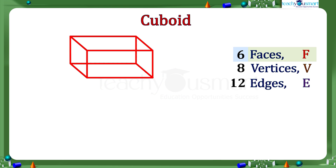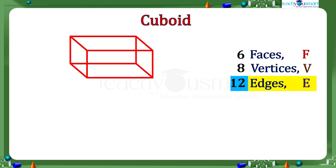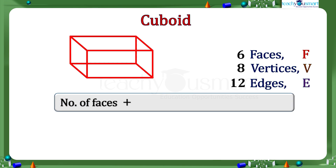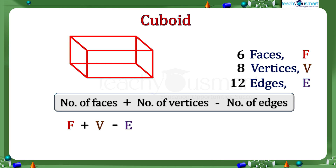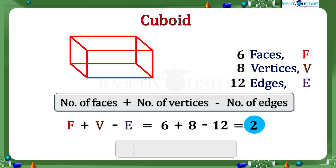Let's see how we can relate the number of faces, vertices, and edges. For that, add the number of faces to its number of vertices and then subtract the number of edges. That is F plus V minus E equals 6 plus 8 minus 12, which equals 2. We get 2 as the answer; that is F plus V minus E equals 2.